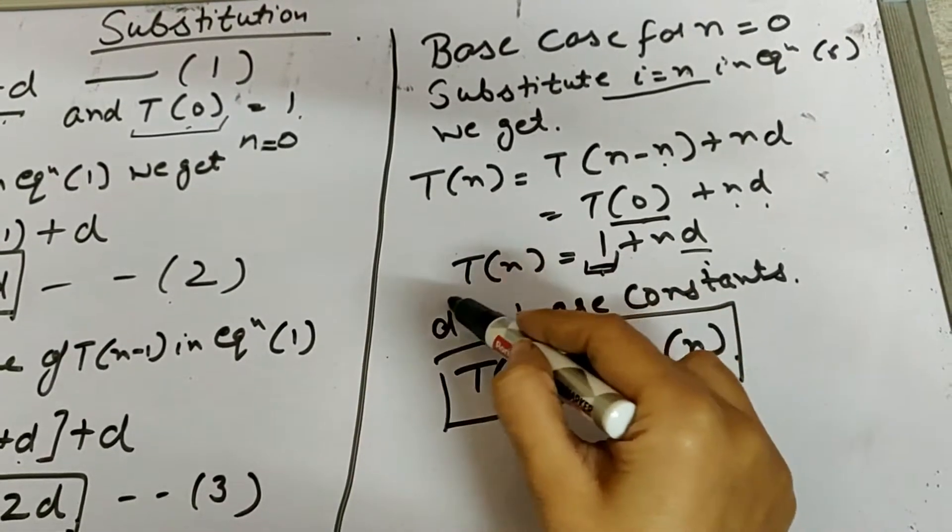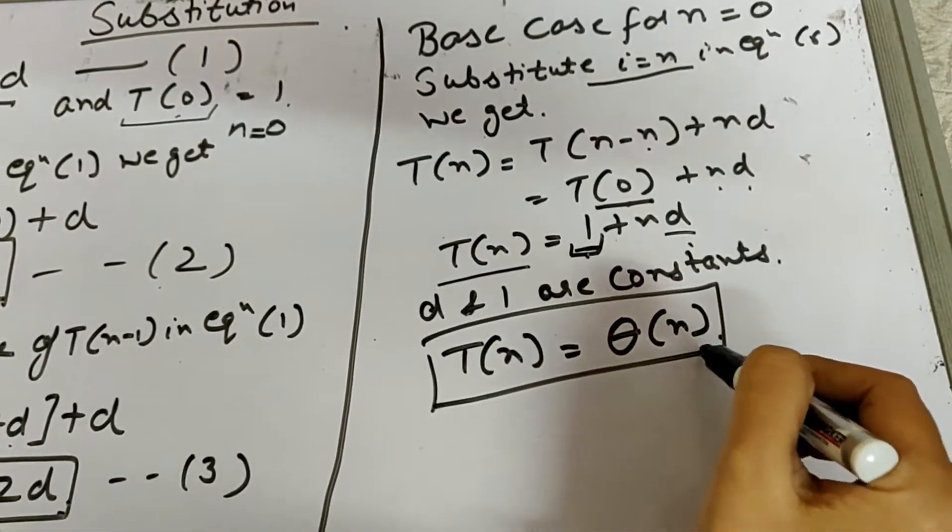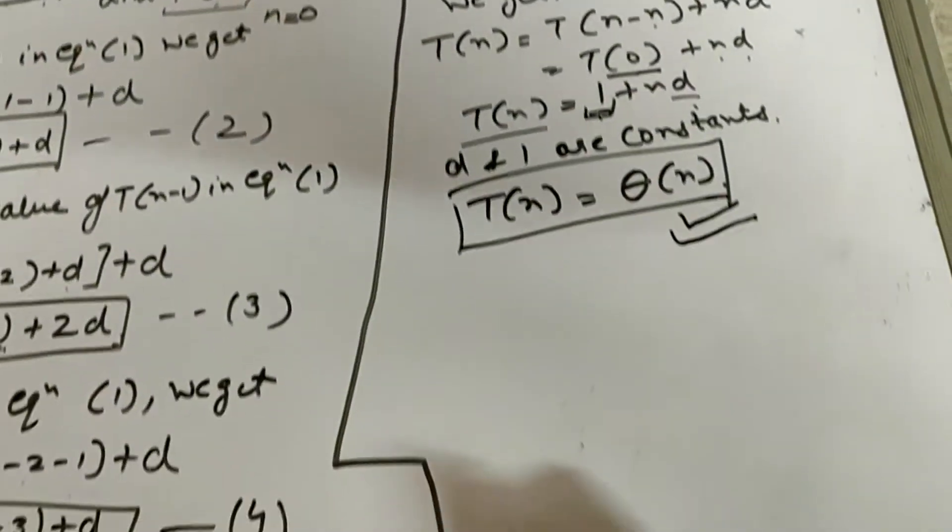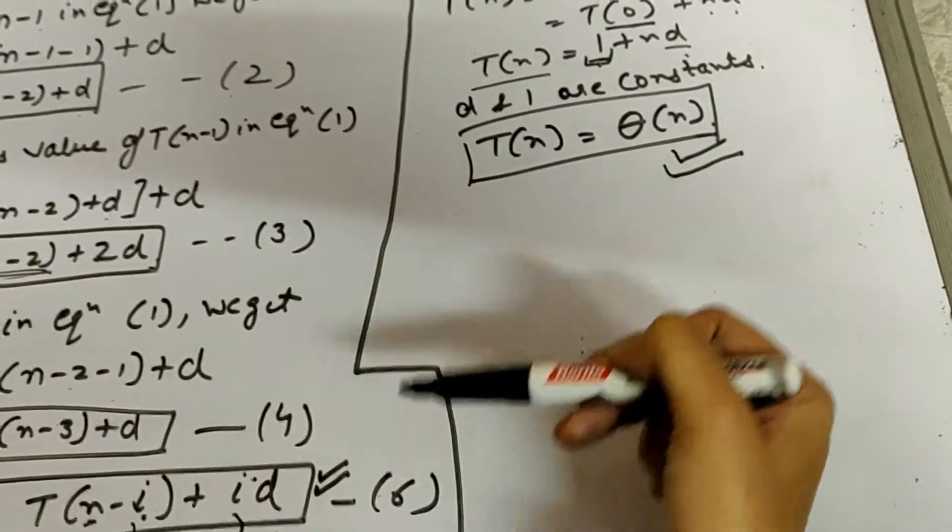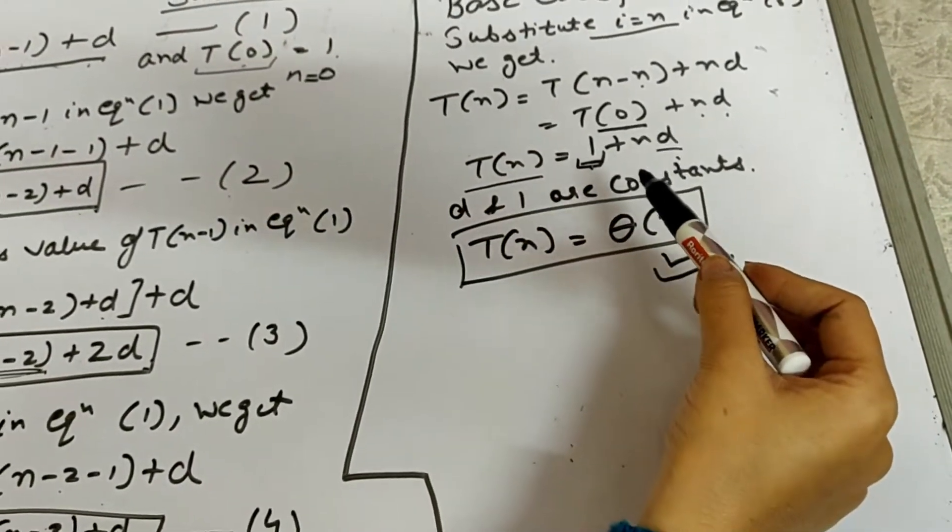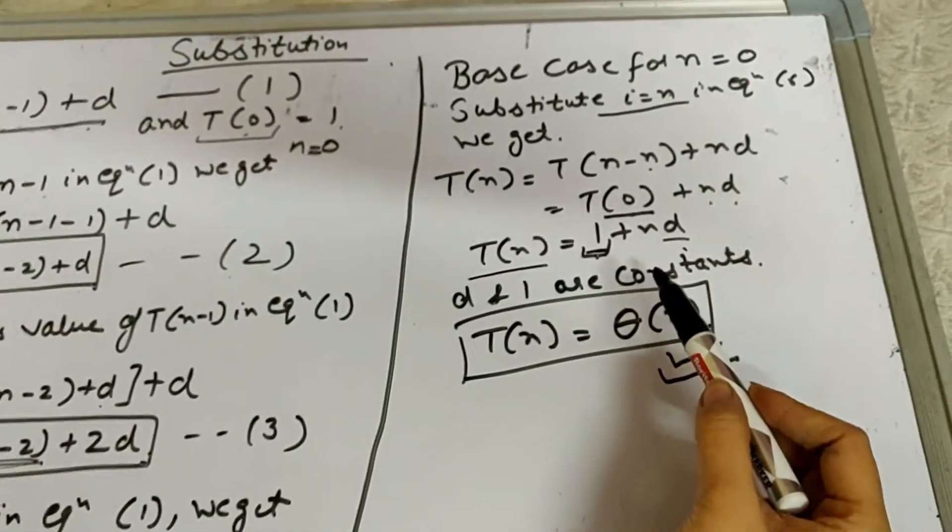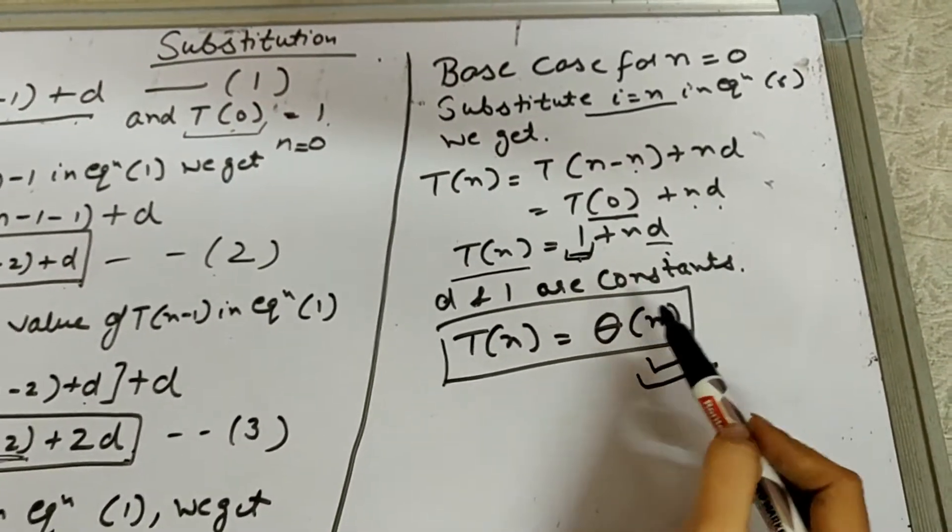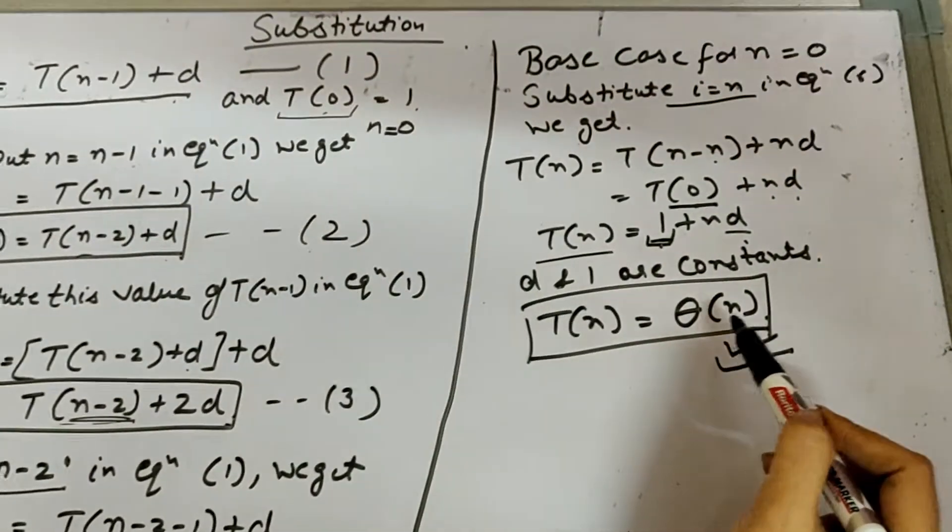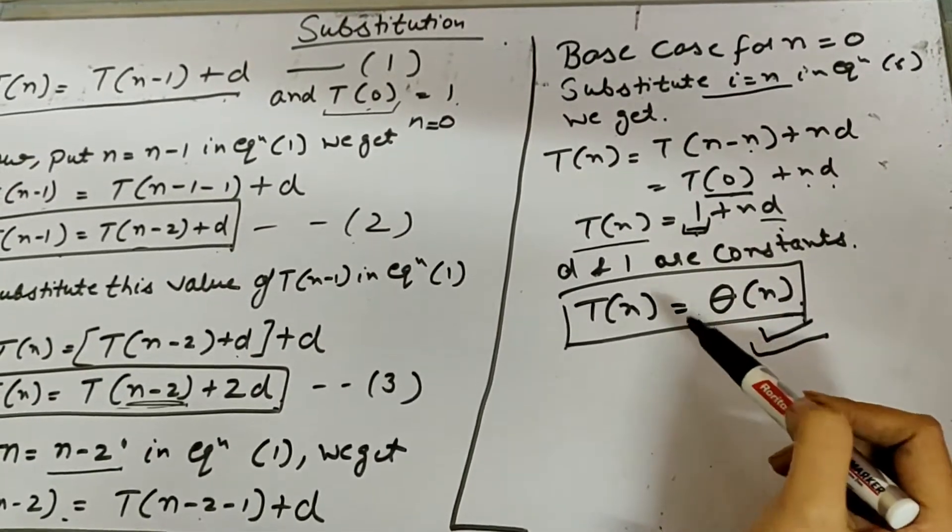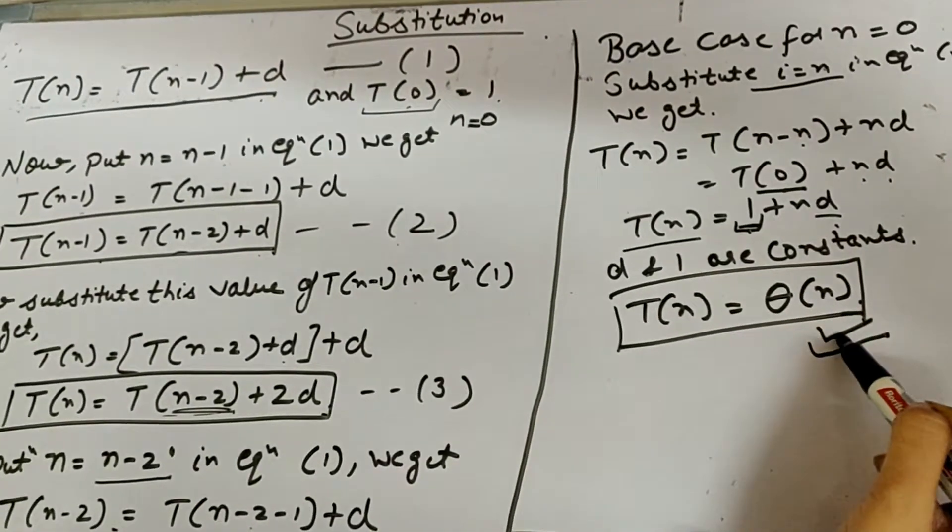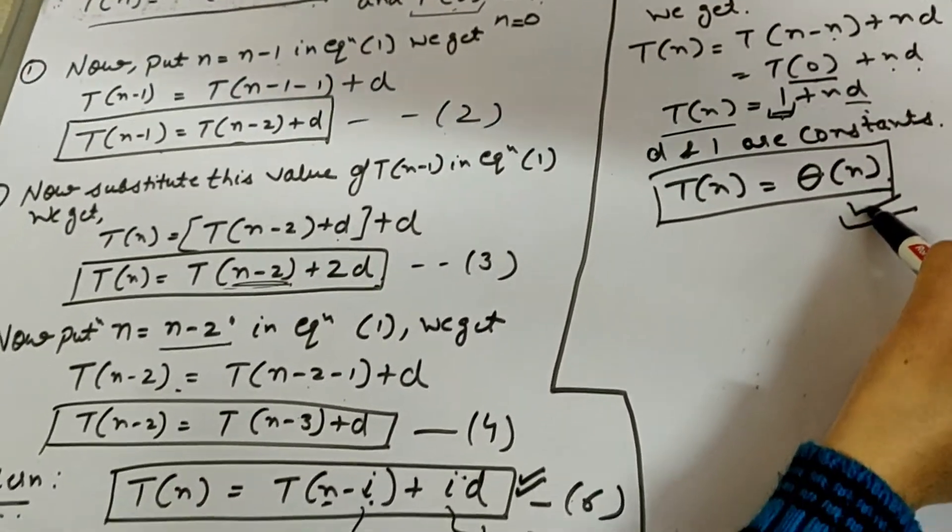Here d and 1, if you can see, we have to ignore them. The total time complexity is O(n). This is the substitution method. And similar to this substitution method, there are a number of other substitution methods. By following the same process, you can find out the overall time complexity of that particular formula.